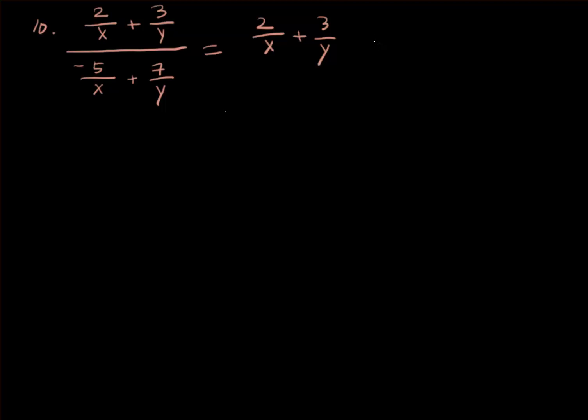3 over y divided by negative 5 over x plus 7 over y. Sorry guys, I'm a little bit tired.